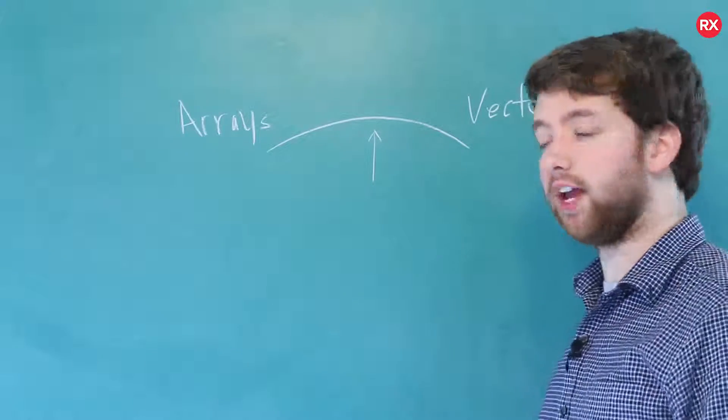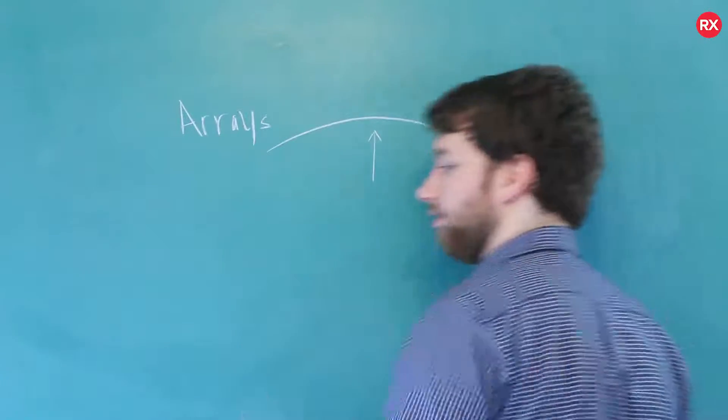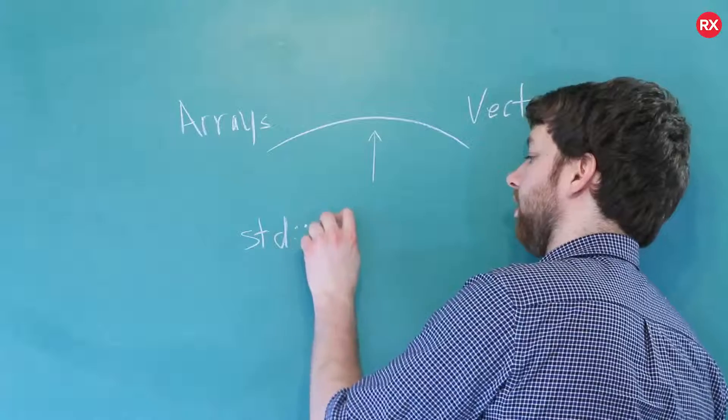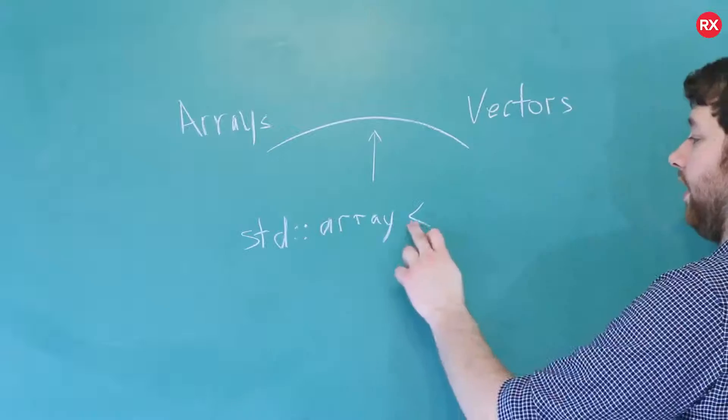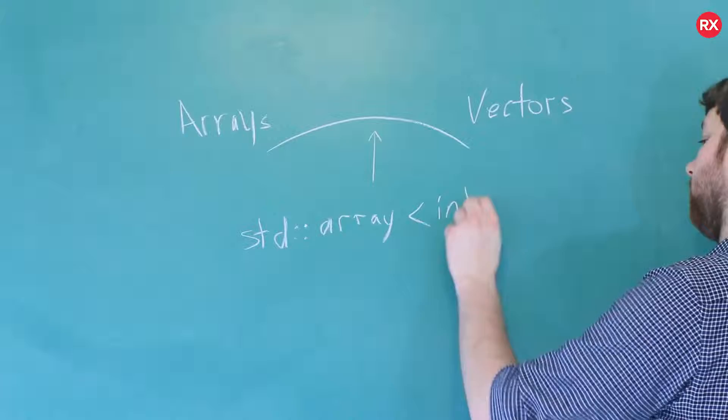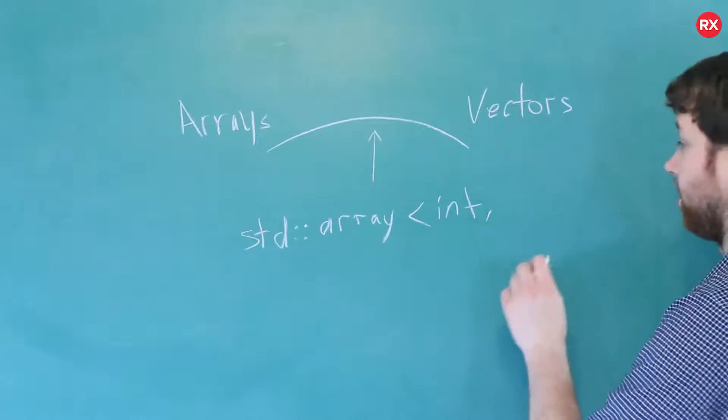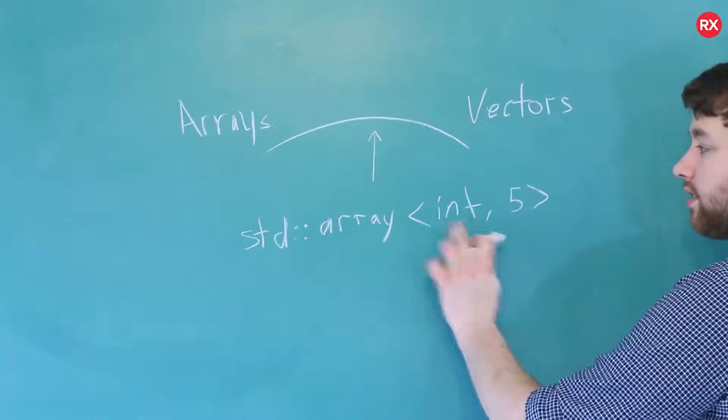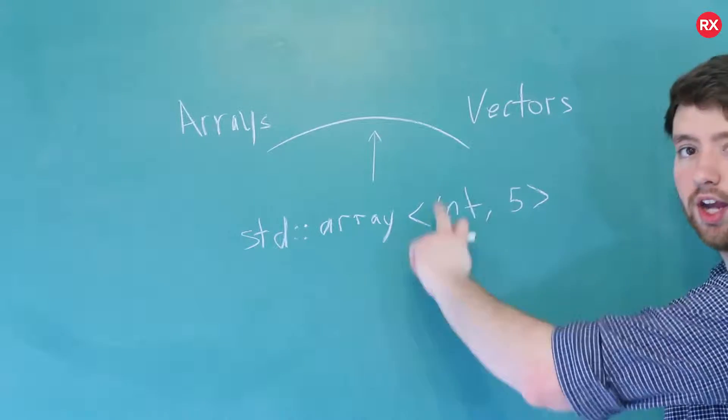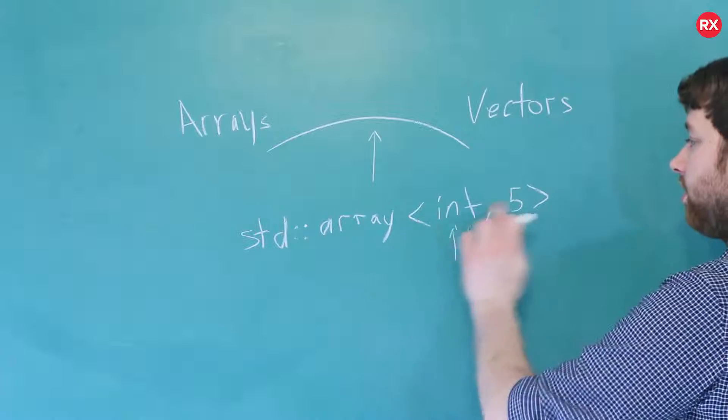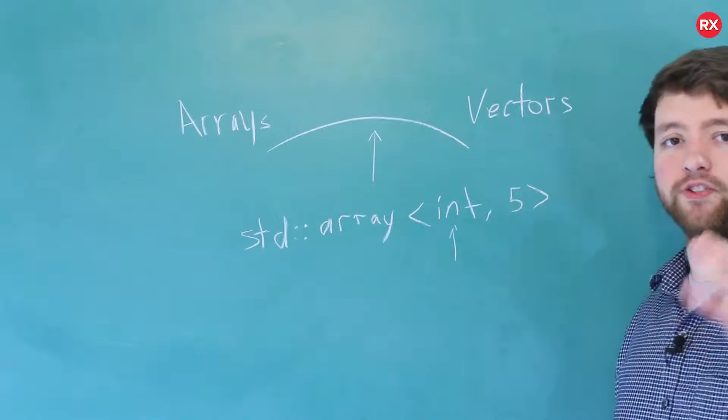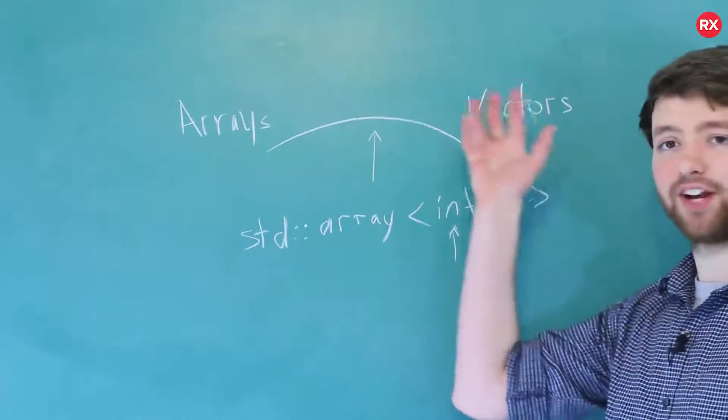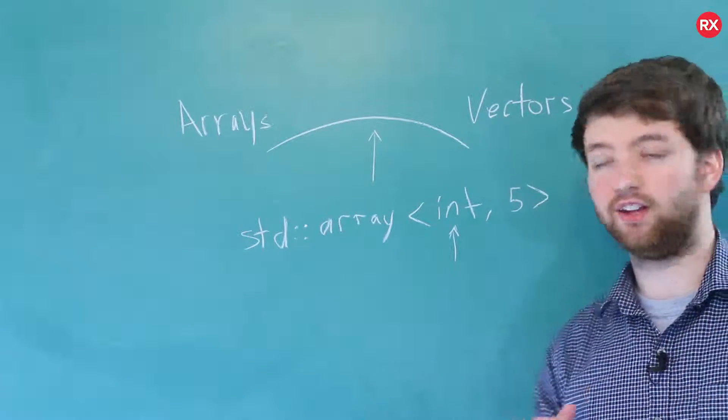So when you create a templatized array it's going to look like this. It's in the standard namespace and then you just say array and then inside of angle brackets you would say the type and the size. So this is what I mean by templatized: it has a type inside of these template marks or the angle brackets, the less than and greater than sign. Anytime you see these you can think of templates or generic programming.